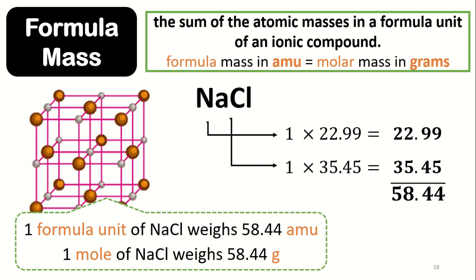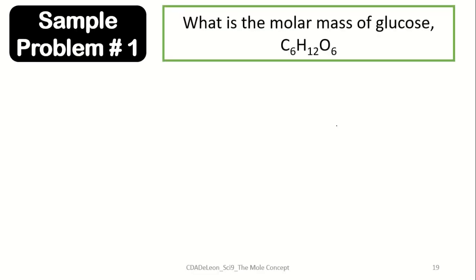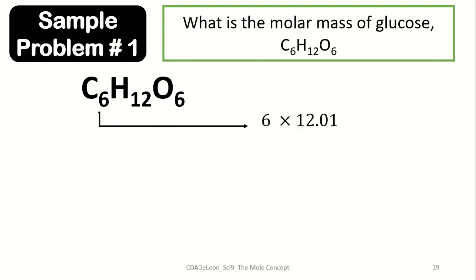Now let us try some sample problems. For the first one, let us get the molar mass of glucose, which is C6H12O6. Glucose has six atoms of carbon, so six atoms of carbon multiplied by 12.01 is equivalent to 72.06.